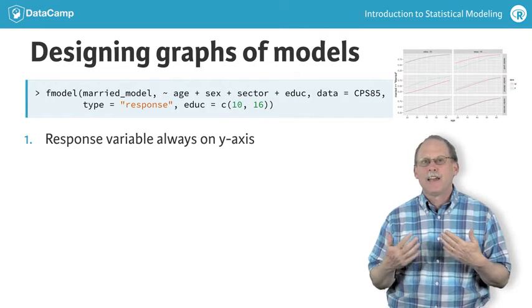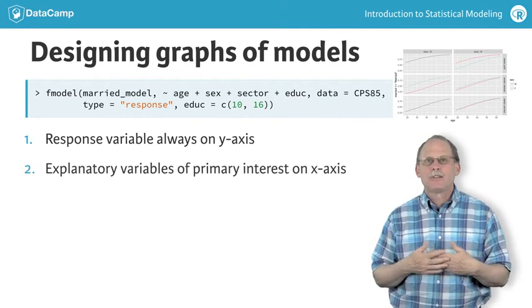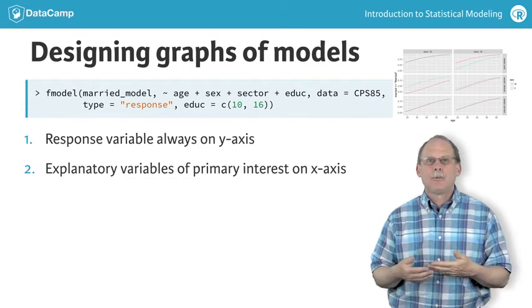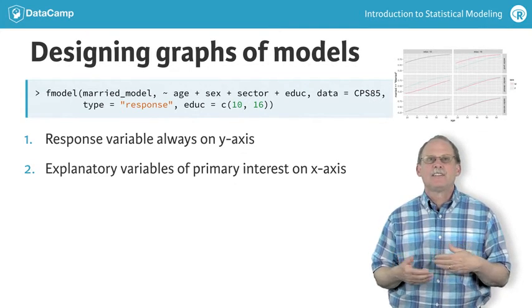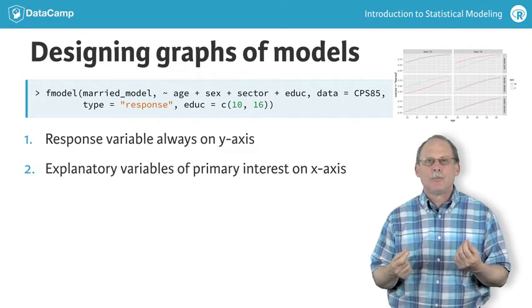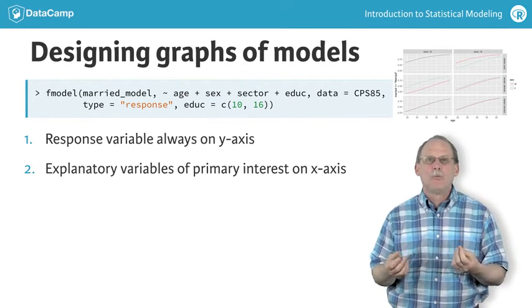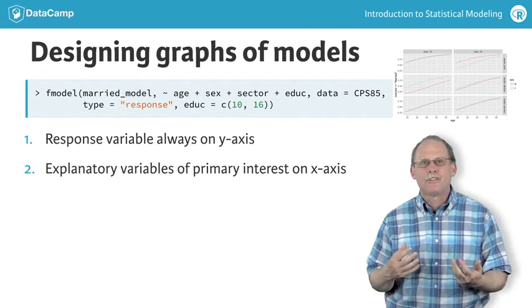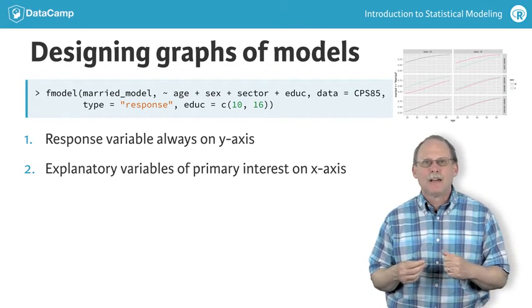For the x-axis, choose the explanatory variable whose effect you want to highlight. For a quantitative variable on the x-axis, the effect size is the rate of change of the plotted line. In other words, the slope of the line. For categorical variables, the effect size is the difference in model output between two different levels.